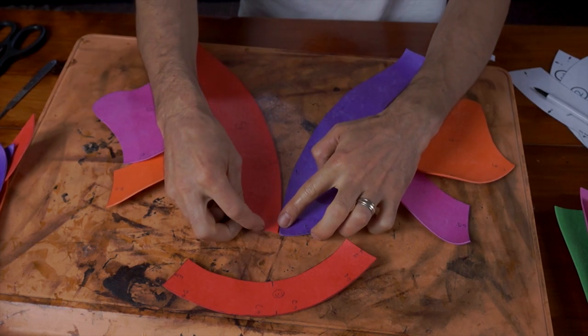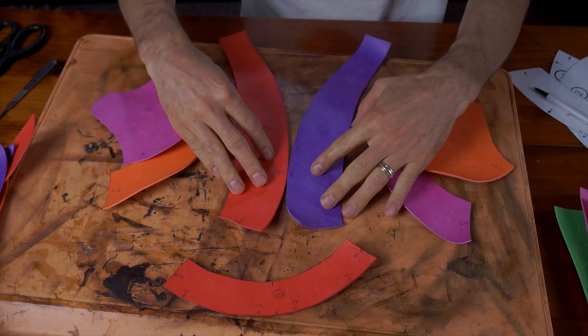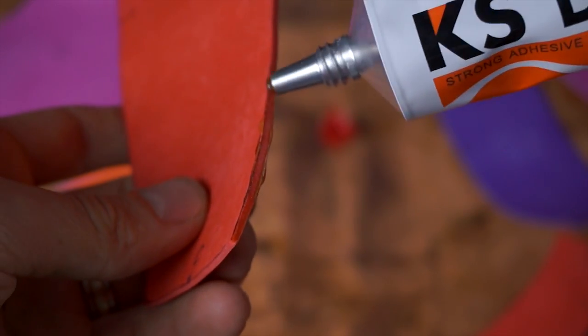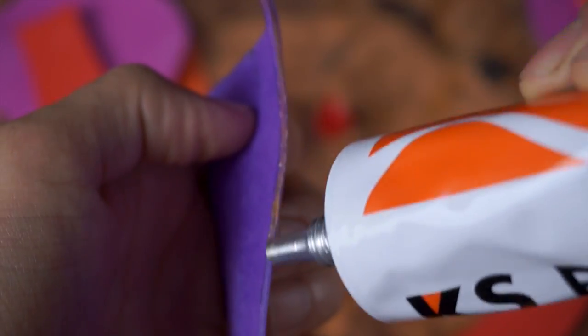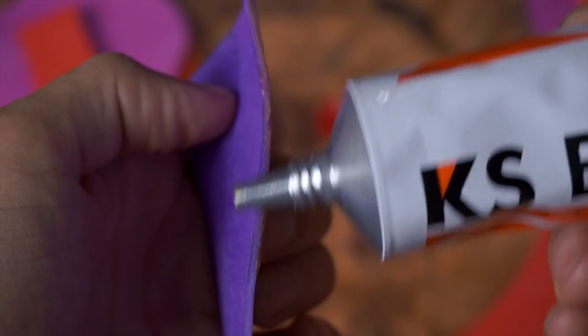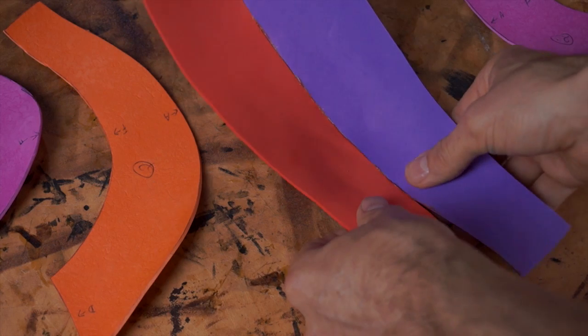Now, starting from the front, glue the two number one pieces together down the center line. Apply contact cement along the center line of both pieces. Let it dry until it's tacky, then firmly press the two sides together.